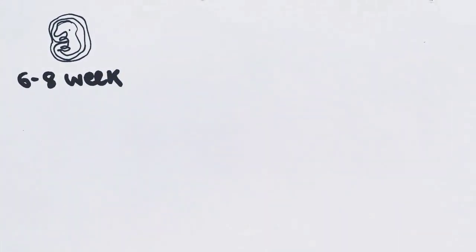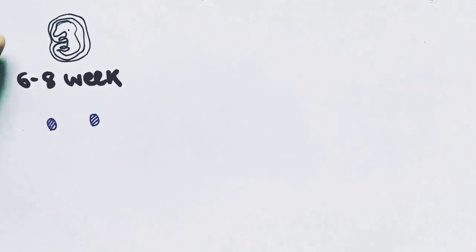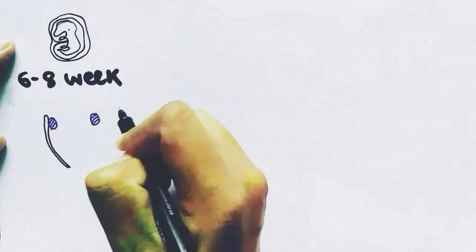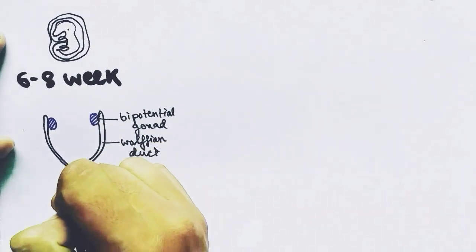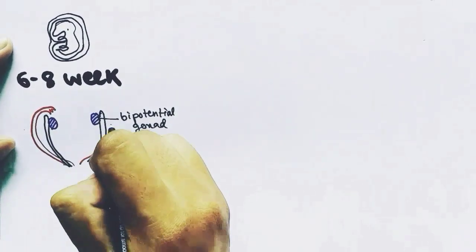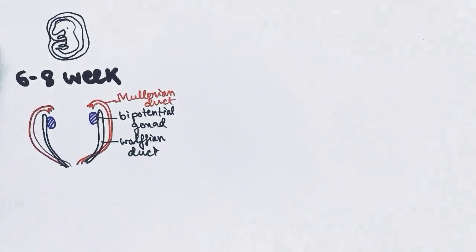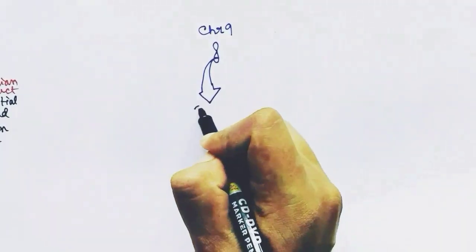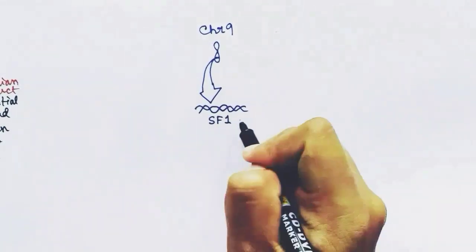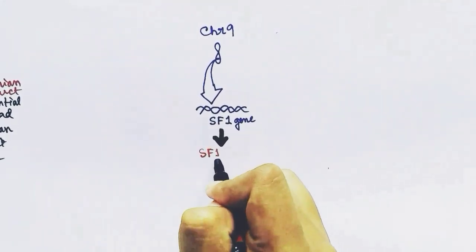Now we will look at female sex differentiation. At six to eight weeks of fetal development, the female also has bi-potential gonads, Wolffian ducts — precursors of male reproductive organs — the Müllerian duct — precursor of female reproductive organs such as the fallopian tube — and the cloaca, which will form the urethra and urinary bladder. Chromosome number 9 has the SF1 gene, an autosomal gene present in both males and females, which forms the SF1 protein.